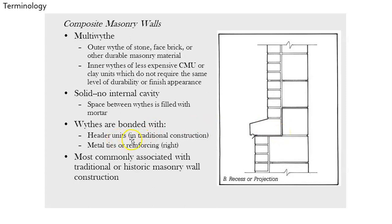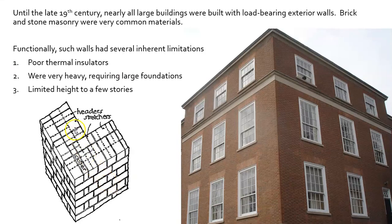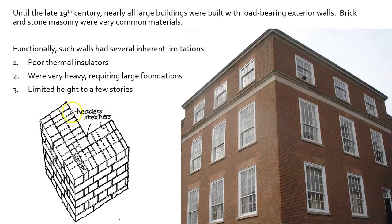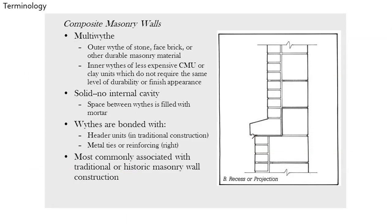Wythes are bonded with header units in traditional construction or metal ties. We can see a metal tie there holding them together. Header units are bricks that have been turned so the short end faces out, lacing together and locking the different wythes in. So brick bond patterns are not just about appearance — they're actually interlocking and holding things together, kind of like a puzzle.